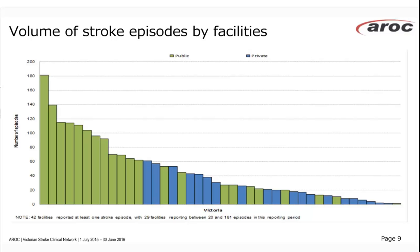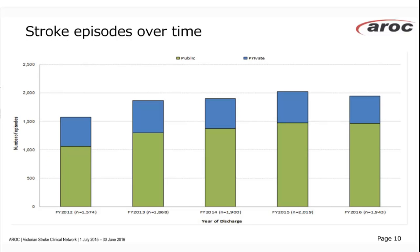Looking at volume over time across the last five years, there was an increase in facilities in 2012, so pay scant attention to the 1,500 figure that year. From 2013 to 2016, somewhere around 2,000 episodes is the volume of patients having stroke rehab in Victoria — about 1,500 in the public sector and around 500 in the private sector.